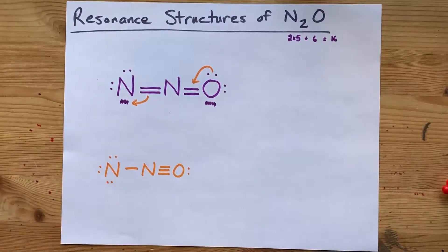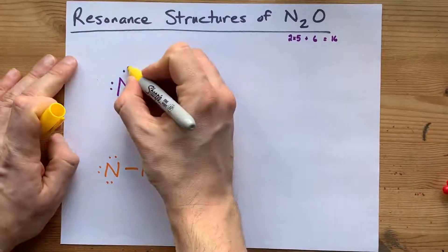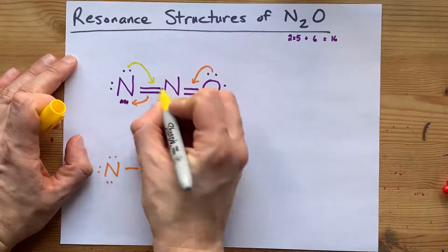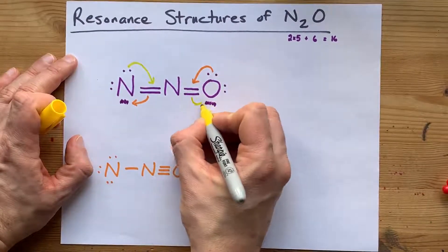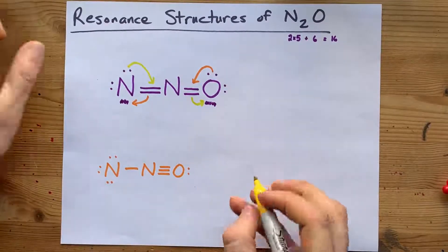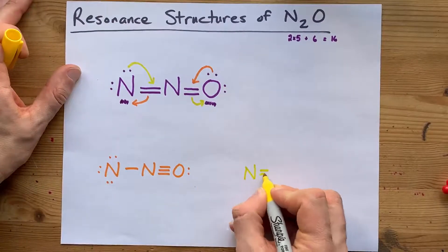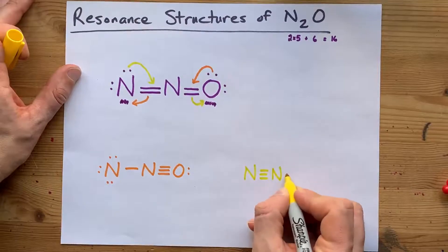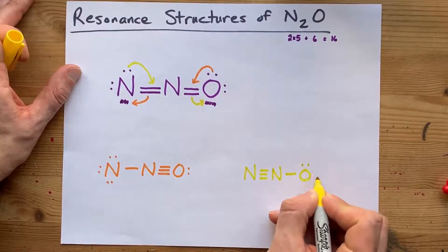Likewise, I could presumably have moved this pair of electrons here, made a triple bond there, and moved that pair of electrons back to the oxygen. In that case, I would have had a nitrogen triple bonded to another nitrogen, single bonded to the oxygen.